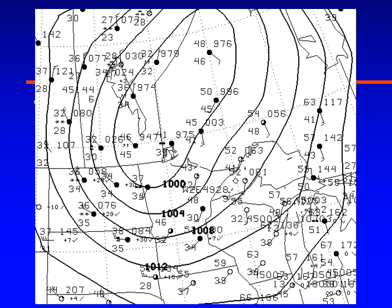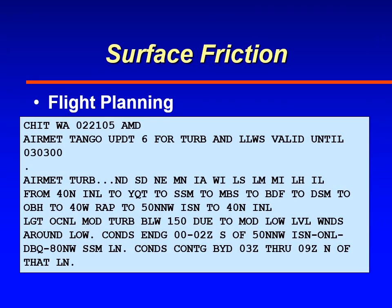Here is a case with a strong low-pressure system that moved over the upper Midwest. The winds across North Dakota are out of the northwest, but over Minnesota and Wisconsin they're out of the south or southwest. There's an airmet Tango that's been updated six times due to changing conditions, mentioning occasional moderate turbulence below 15,000 feet due to moderate low-level winds around this low-pressure system — winds up to about 20–25 knots, but still significant shear.